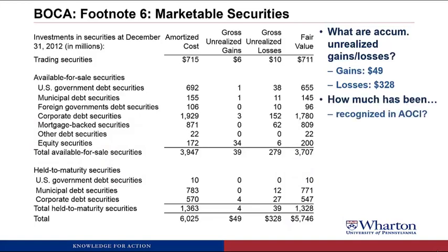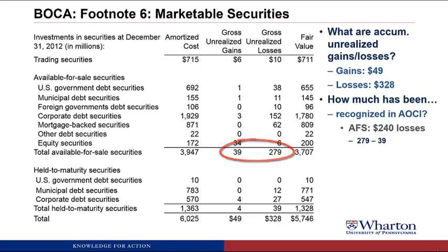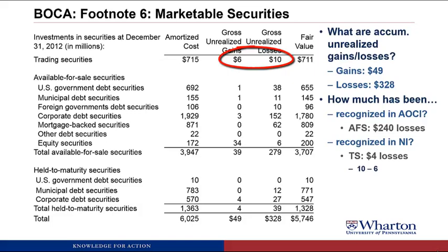Now let's talk about where these unrealized gains or losses have been recognized in the financial statements. The ones that have gone into AOCI are from the available for sale securities. What we put in AOCI is a net unrealized loss of 240 — that's the 279 of unrealized losses minus the 39 of unrealized gains, leading to a net unrealized loss in AOCI from the available for sale securities of 240. What's gone into net income? Trading securities is the method where unrealized gains or losses go to net income. Looking at trading securities, it's going to be a net of four in losses recognized — that's 10 of unrealized losses minus six of unrealized gains. That four is the cumulative net income effect from when the securities were bought up until now.